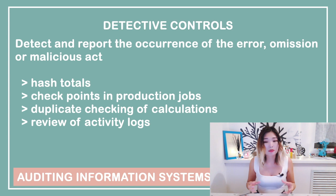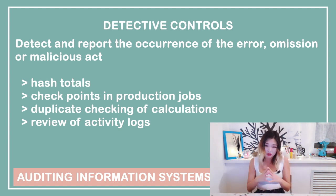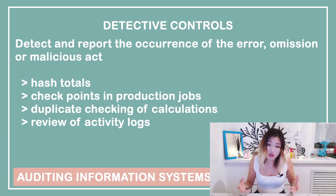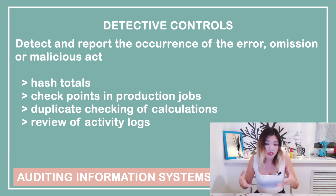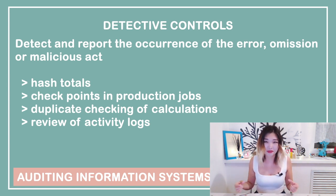Detective controls help to detect when a problem occurs and report on it. Some examples of detective controls include hash totals, checkpoints in production jobs, echo controls in telecommunications, error messages over tape labels, duplicate checking, and variance reporting. Let's try to look at each of these individually.